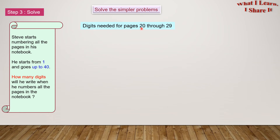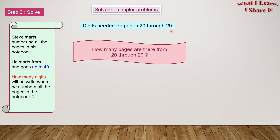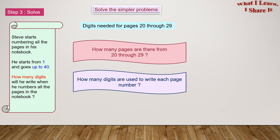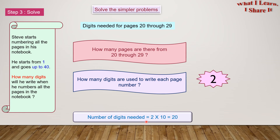Digits needed for pages 20 through 29. There are 10 pages from 20 to 29. Two digits are used to write each page number. Number of digits needed equals 2 times 10 equals 20.